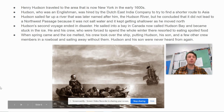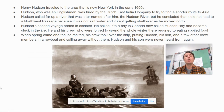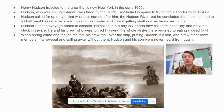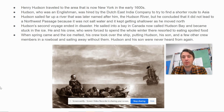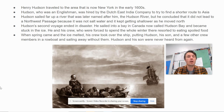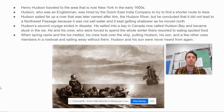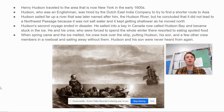Henry Hudson traveled to the area that is now New York in the late 1600s. Hudson, who was an Englishman, was hired by the Dutch East India Company to try to find a shorter route to Asia. Hudson sailed far up a river that was later named after him, the Hudson River, but he concluded that it did not lead to a northwest passage. In other words, it didn't go all the way through the North American continent, because it was not saltwater and it kept getting shallower as he moved north.